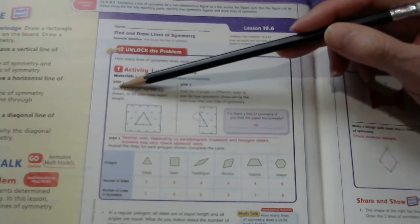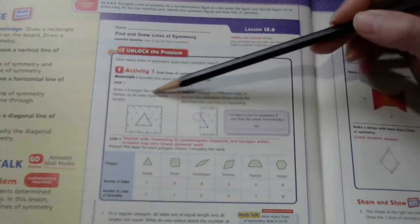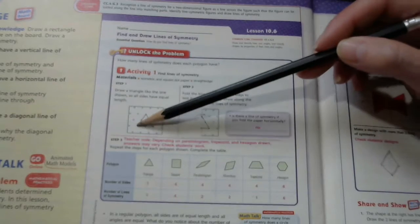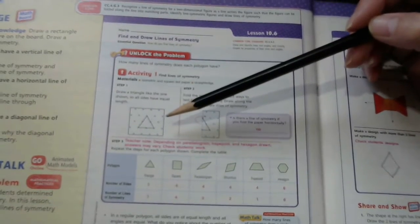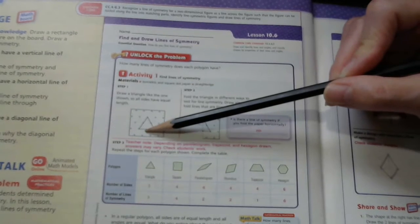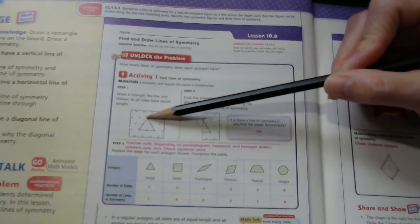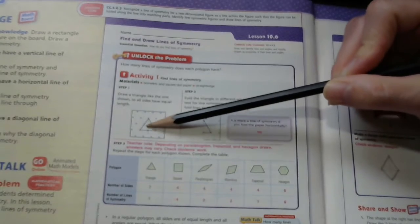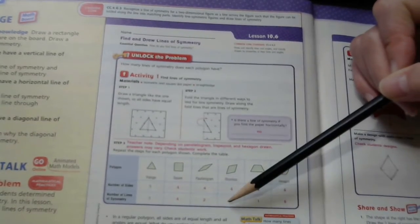It says draw a triangle like the one shown, so all sides have equal length. Then we have to figure out how many lines of symmetry. Remember, a line of symmetry means it will create an exact figure, a mirror-like figure, on the opposite side.